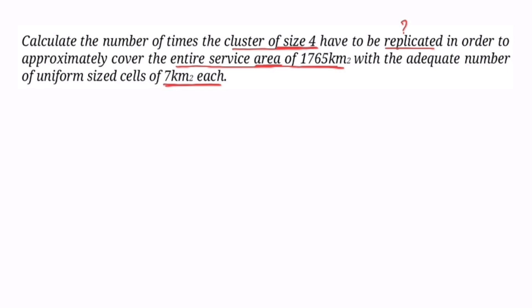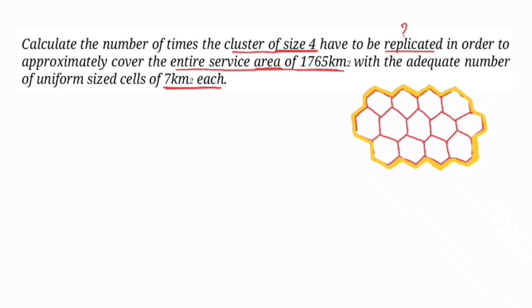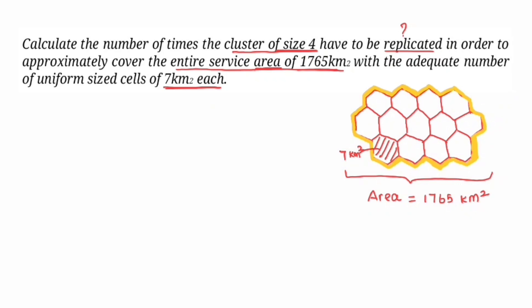Now look at this diagram. The total service area is 1,765 km². The cells are uniform size, so one cell area is 7 km². The cluster size is 4, and with frequency reuse the cluster will have the same size.